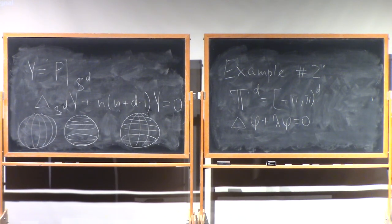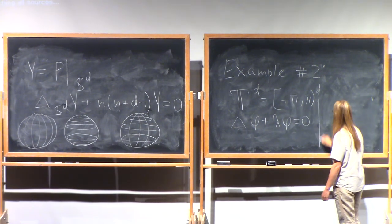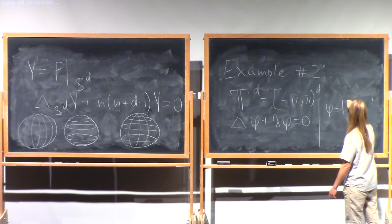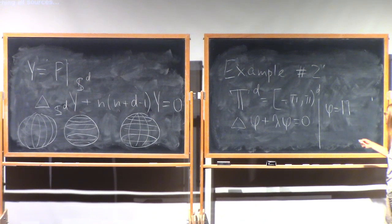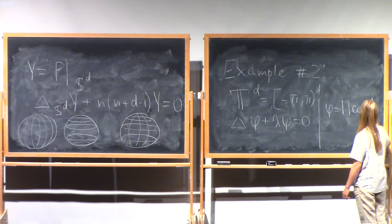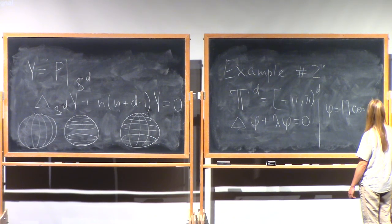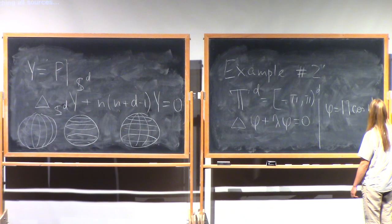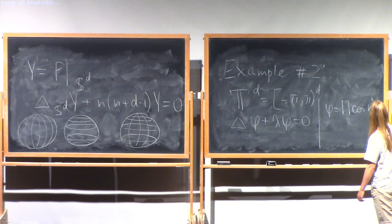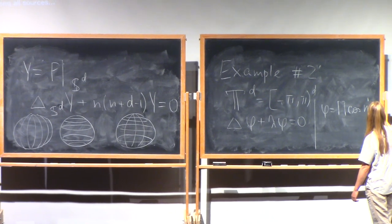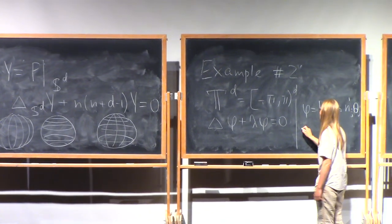And you also have simple eigenfunctions. You can divide the variables and look at eigenfunctions of the form that are products of trigonometric functions, say cosines. Let me define this by theta.